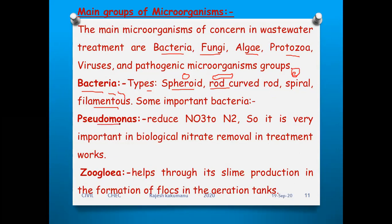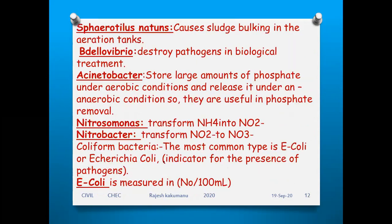Pseudomonas requires N2 nitrogen and is very important in biological nitrate removal in treatment works — it is a method used to remove bacteria count from wastewater. Zooglea helps through its slime production in the formation of flocs in the aeration tank. This is a method where slime is produced in the formation of flocs in the aerated tank where oxygen is present.